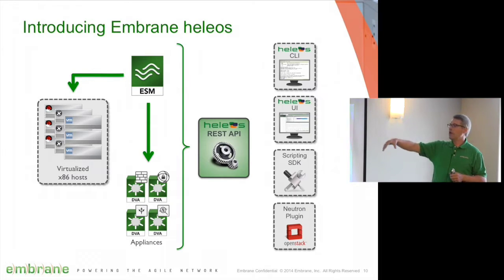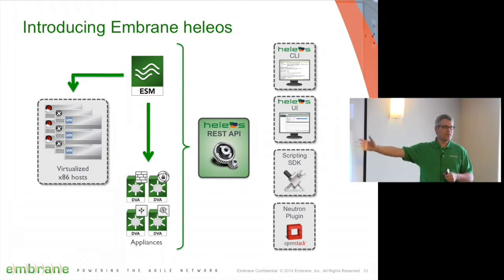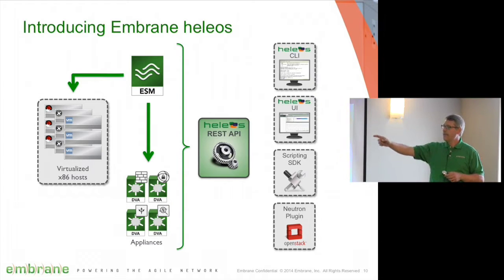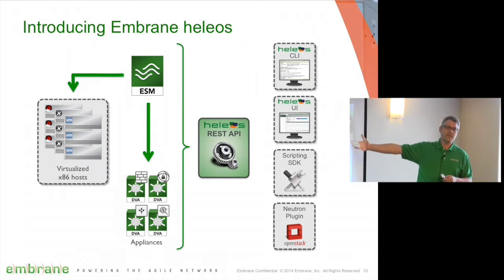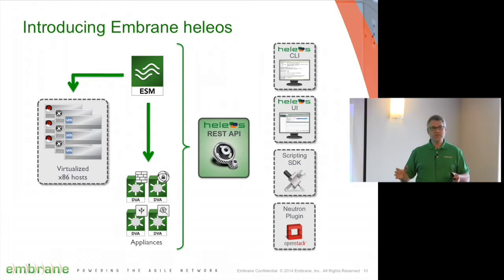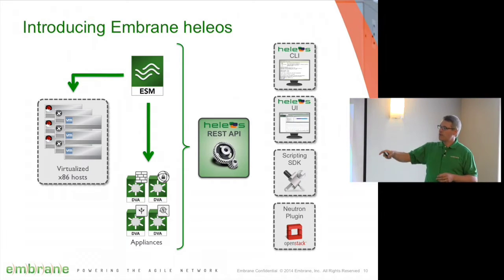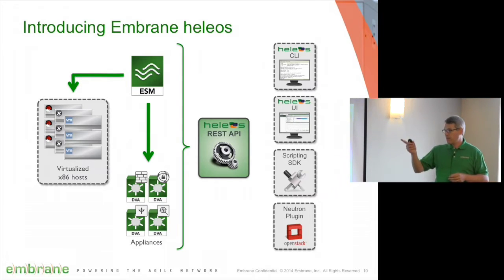You'd set up a user account on those hypervisors that the ESM uses to contact and manage those resources. In VMware specifically, there are about 250 unique permissions you could give to a user on the hypervisor — we only need 17 of them. So we don't need full root access, although most customers commonly do that. We just need a very small subset of capabilities in the role assigned to the ESM, which contacts those resources through their APIs.